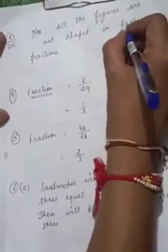So what is our next question students? Question number 4. We are going to do our question number 4. So in the question number 3 you can only write down as no. All the figures are not shaped in proper fractions. Proper ke fraction ke according unko shade nahin kiya gaya hai.